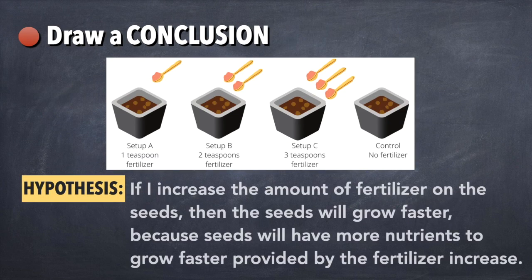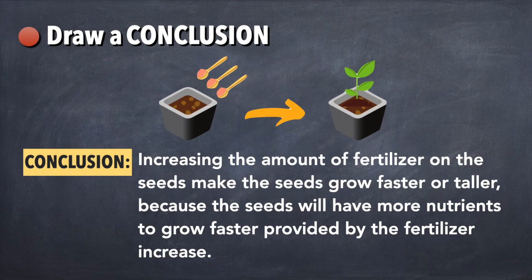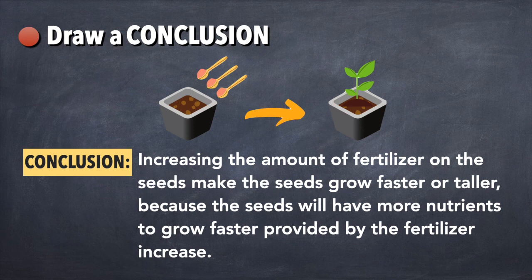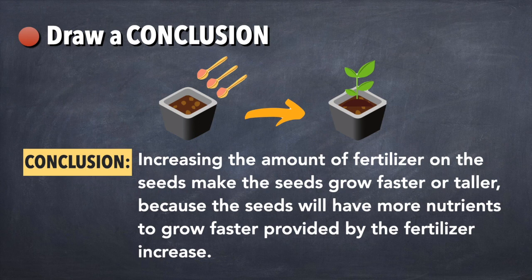Going back to our example, our hypothesis was if I increase the amount of fertilizer on the seeds then the seeds will grow faster because seeds will have more nutrients to grow faster provided by the fertilizer increase. Our conclusion would be increasing the amount of fertilizer on the seeds make the seeds grow faster or taller because the seeds will have more nutrients to grow faster provided by the fertilizer increase.